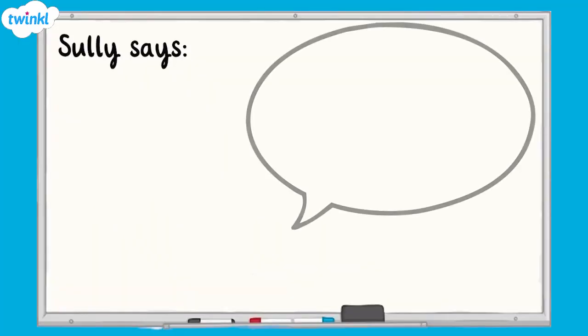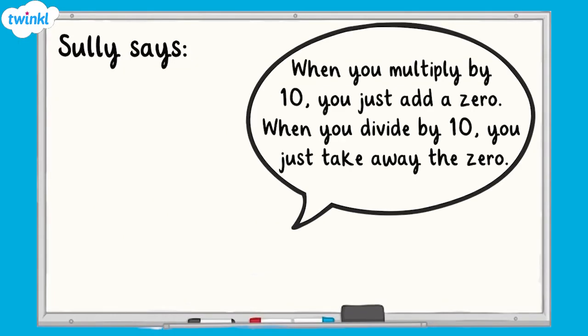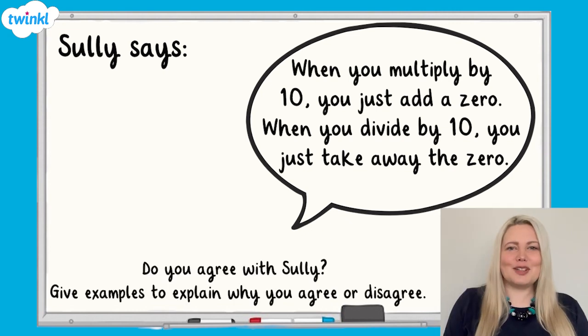Now it's time to try this challenge question. Sully says, when you multiply by 10, you just add a zero. When you divide by 10, you just take away a zero. Do you agree with Sully? Give examples to help explain why you agree or disagree. Pause the video now and have a go.